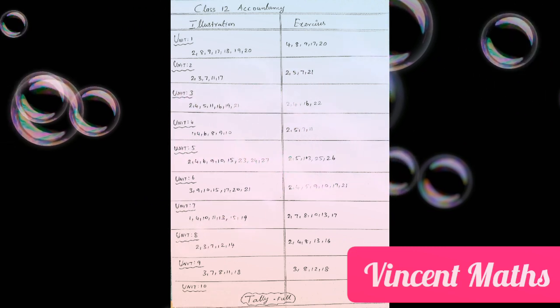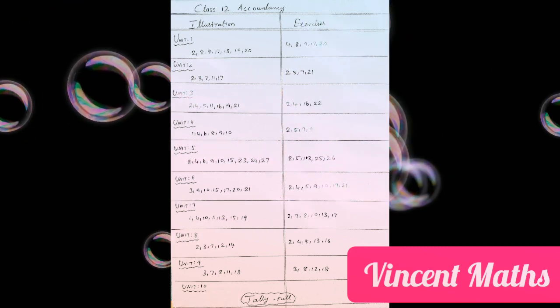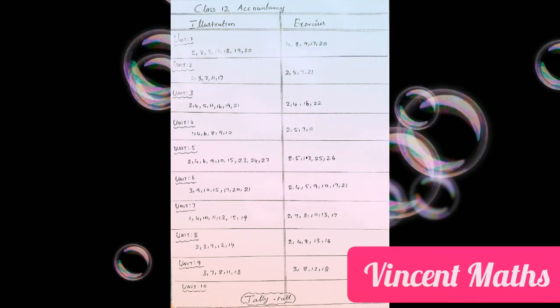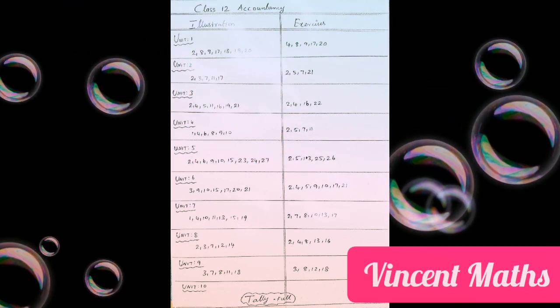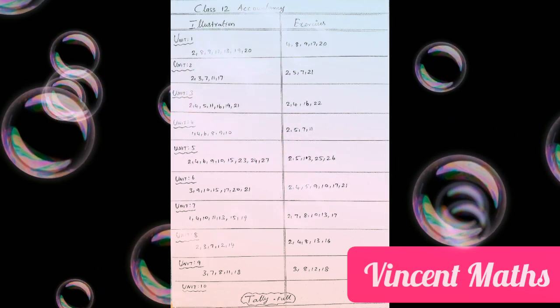The most important information is 2nd, 5th, 7th, and 21st. Then, 3rd unit.